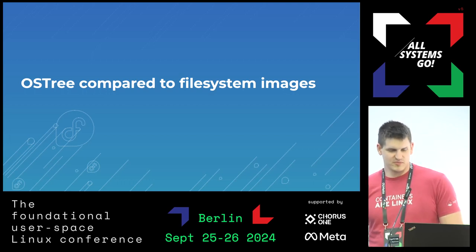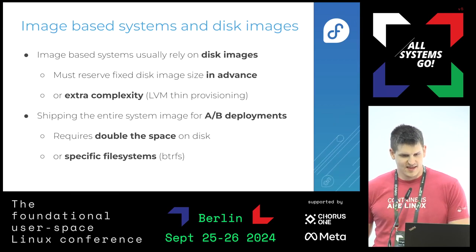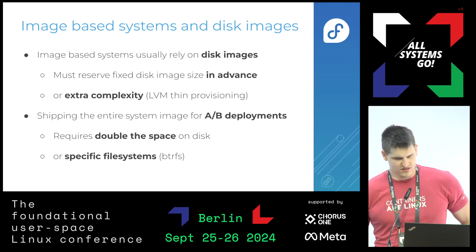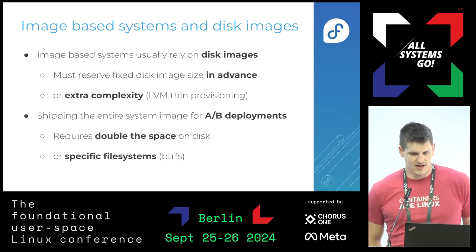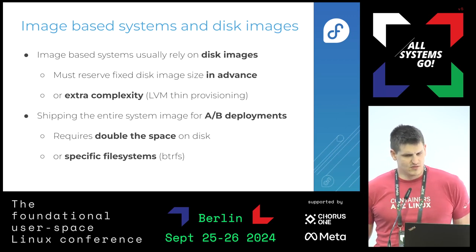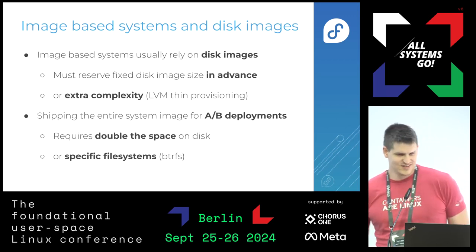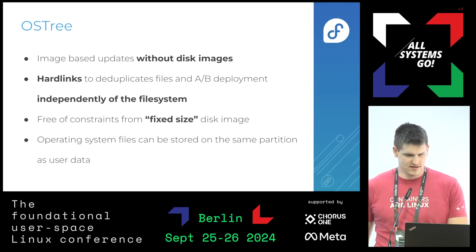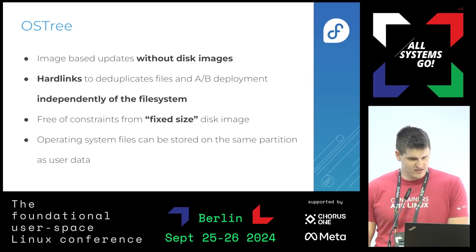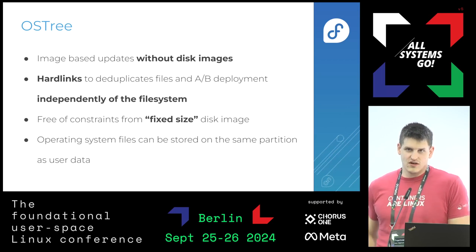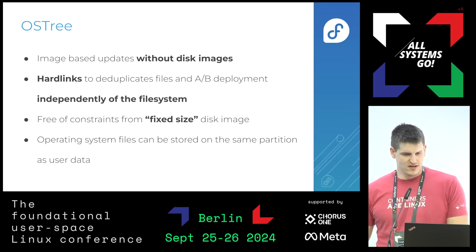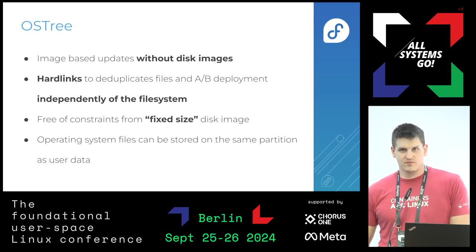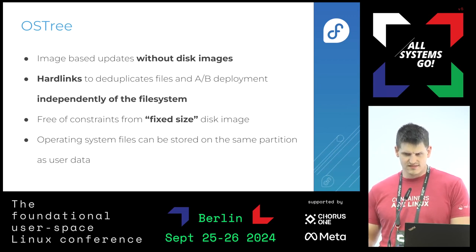Let's quickly go over how OSTree compares to other well-known filesystem image approaches. Usually image-based systems rely on whole disk images. Android is a famous example — you ship the whole image and do A/B deployment: if you're booted on A, you download the image, write to B, then reboot on that. But that requires double the space, or triple if you want two rollbacks. This could be worked around with more complexity like LVM or relying on specific filesystems, but that's extra complexity. On the other hand, OSTree works without any disk images, because it's agnostic of the filesystem — just using hard links. So we're free of fixed-size disk images, and we can easily share the partition with user data, giving us less setup complexity overall.